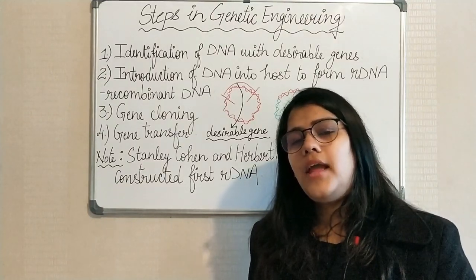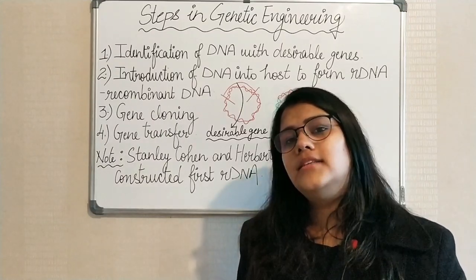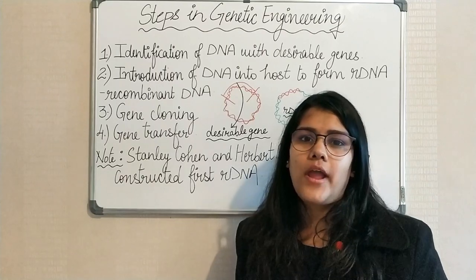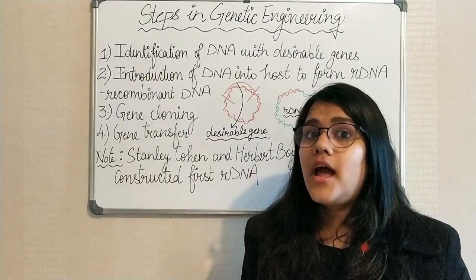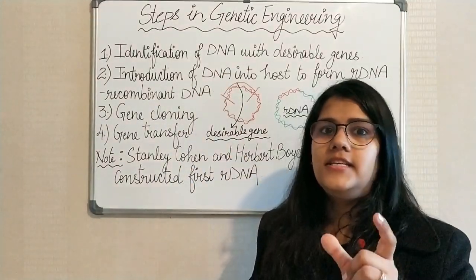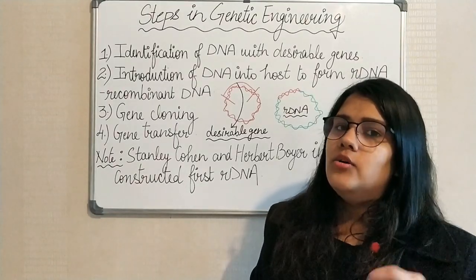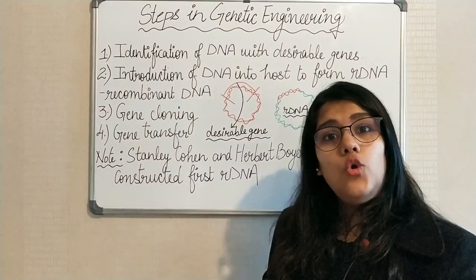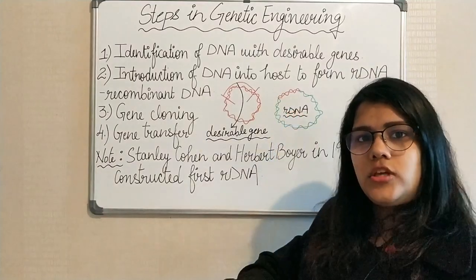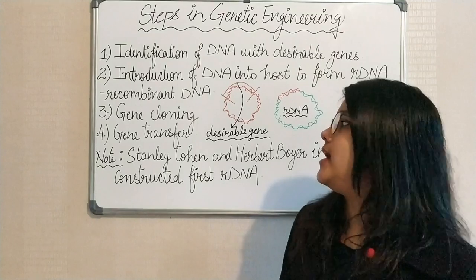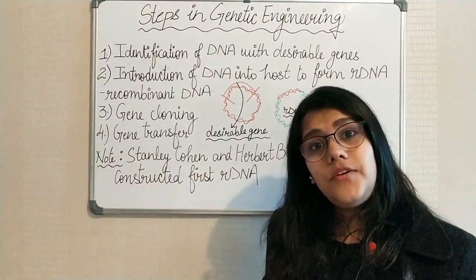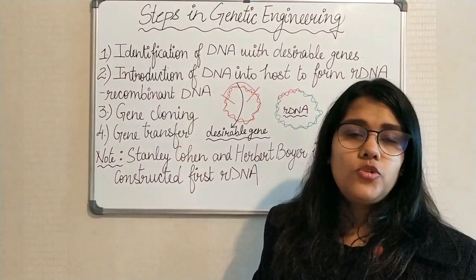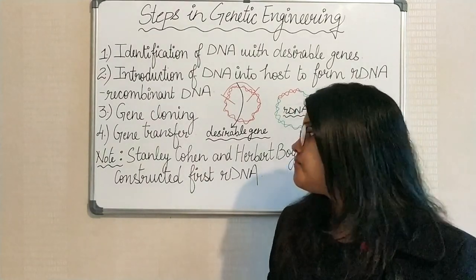The last step is gene transfer. After the gene has been cloned many times, we take our desirable gene out of the host organism and place it into a sterilized container where our final product can easily be made. So for insulin: first, I identify and extract the desirable DNA from human DNA; then I introduce it into the host organism and form recombinant DNA; the recombinant DNA clones itself repeatedly, increasing the number of copies of my desirable DNA; then I transfer all of that DNA into a suitable container where the final product — insulin — is produced.